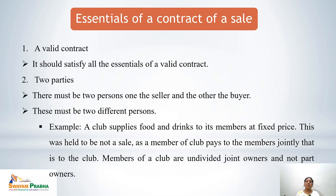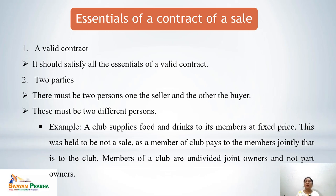The second essential is two parties. There must be two parties in the contract of sale — one must be the seller and the other the buyer. For example, a club supplying food and drinks to its members at a fixed price was held not to be a sale, as a member pays to the members jointly. For a valid sale, there must be at least two parties in the contract.